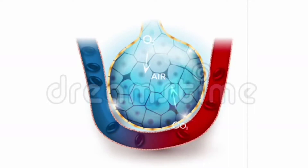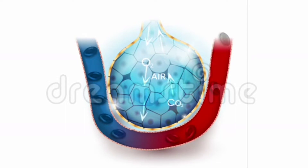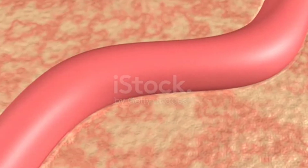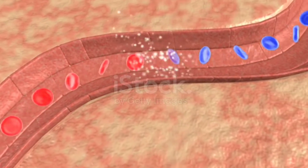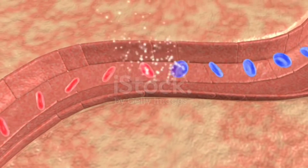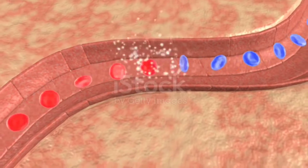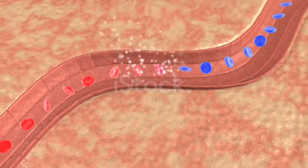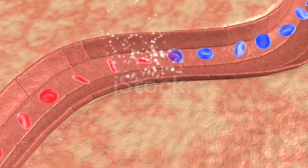Exchange of gases occurs primarily at the alveoli, which are the primary sites of gas exchange. It also occurs between blood and tissues. Oxygen and carbon dioxide are exchanged at these sites by simple diffusion, mainly based on pressure or concentration gradient. Solubility of the gases as well as the thickness of the membranes involved in diffusion are also important factors that can affect the rate of diffusion.